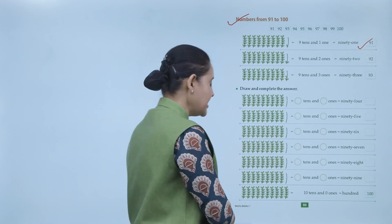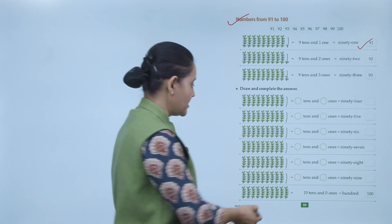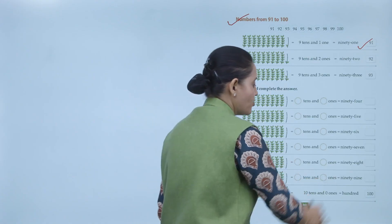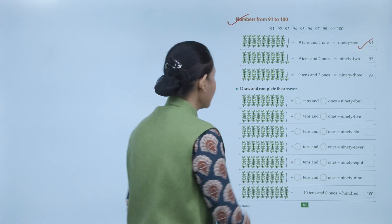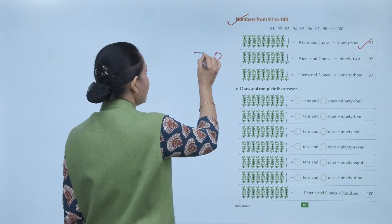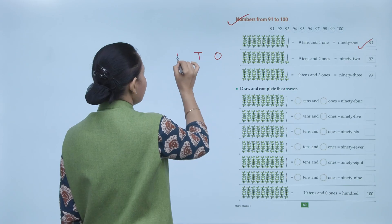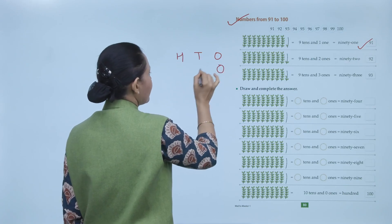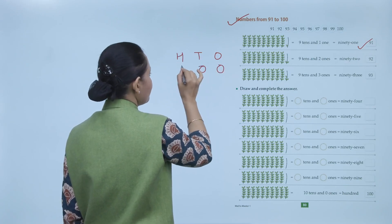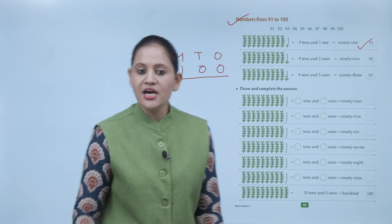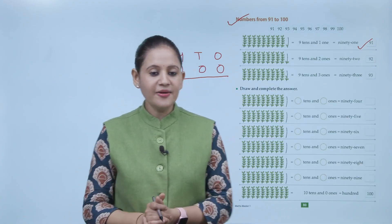100 means 10 tens plus 0 ones — written as 1-0-0, which is 100. Here a new place starts — ones, tens, and hundreds. So 0 at ones place, 0 at tens place, and 1 at hundreds place. That equals 100. Clear?